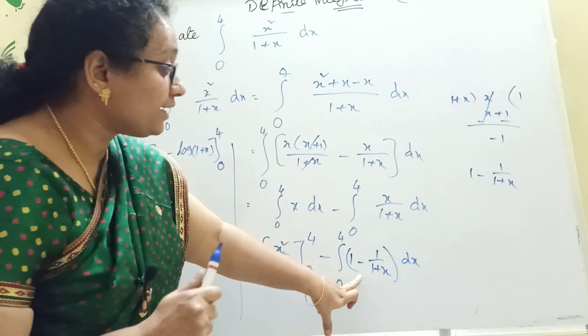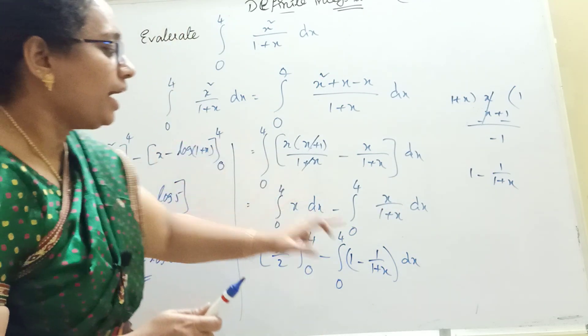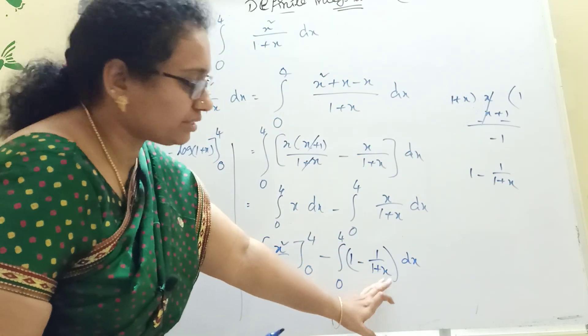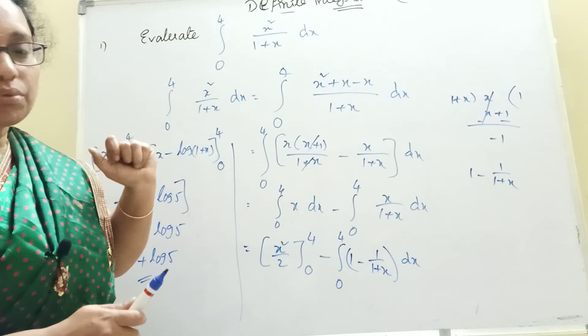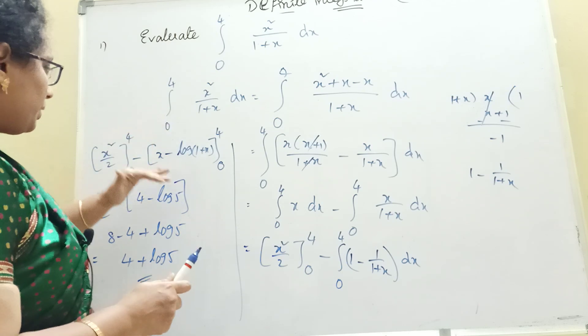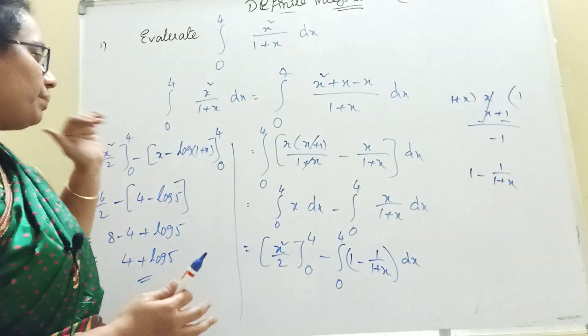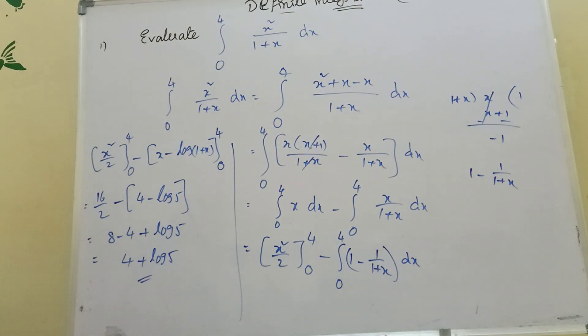Integration of 1 is x. Integration of 1 by x gives log mod x. We apply integration formulas and then apply the limits.